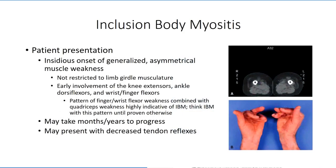The initial presentation involves the onset of muscle weakness with no apparent cause. The presentation may be unilateral or bilateral. Unlike the other forms of inflammatory myopathy, it does not follow a limb girdle distribution pattern. Wrist flexors, knee extensors, and ankle dorsiflexors are commonly affected. This pattern of weakness in wrist flexors combined with knee extensors is so unique that it puts inclusion body myositis at the top of the differential diagnosis list.